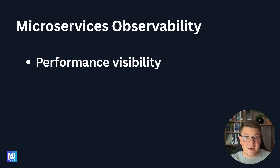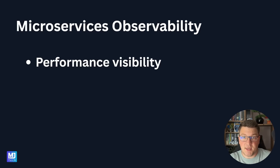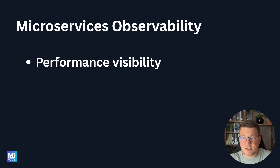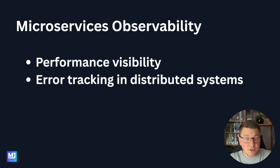Sentry can be an excellent solution here with support for distributed tracing, which also contains timing information, allowing us to figure out where the slowly performing services are. You can also hook into the profiling support that Sentry has, which has the ability to pinpoint problems at the source code level.